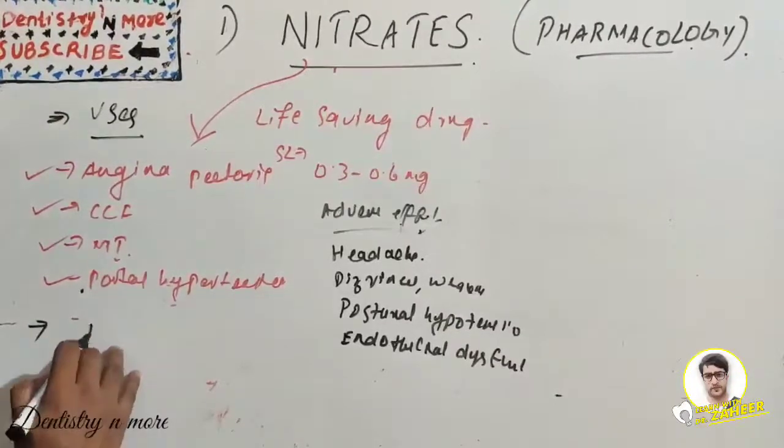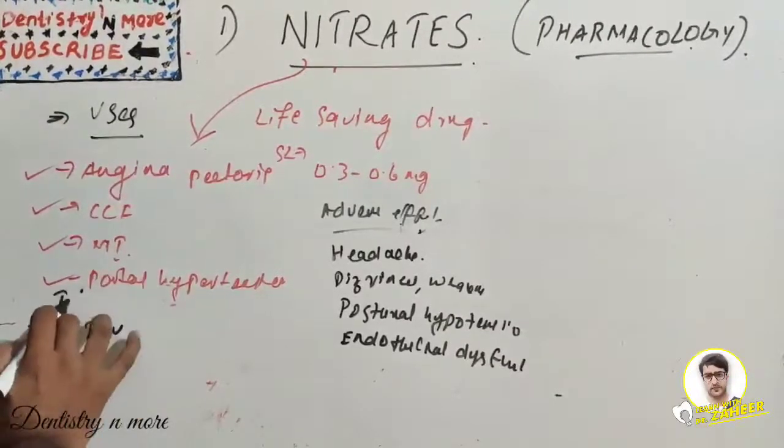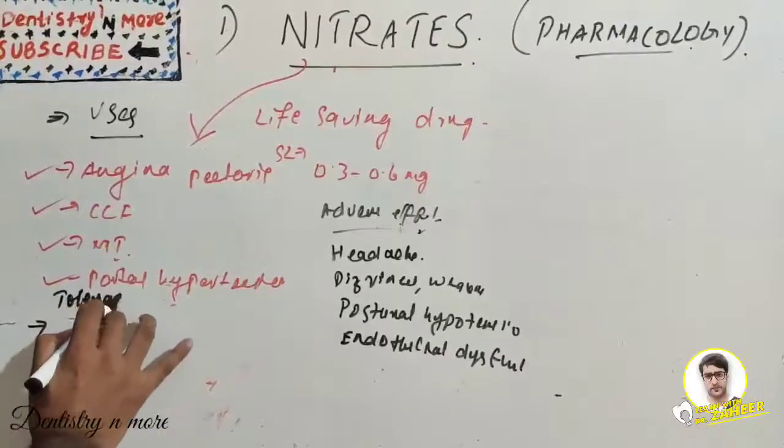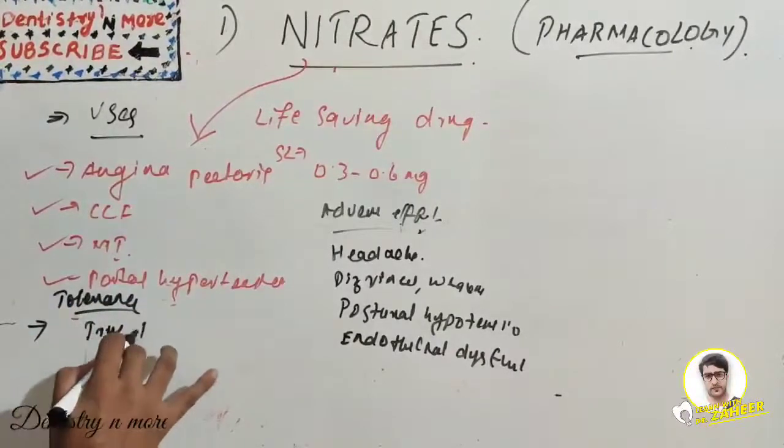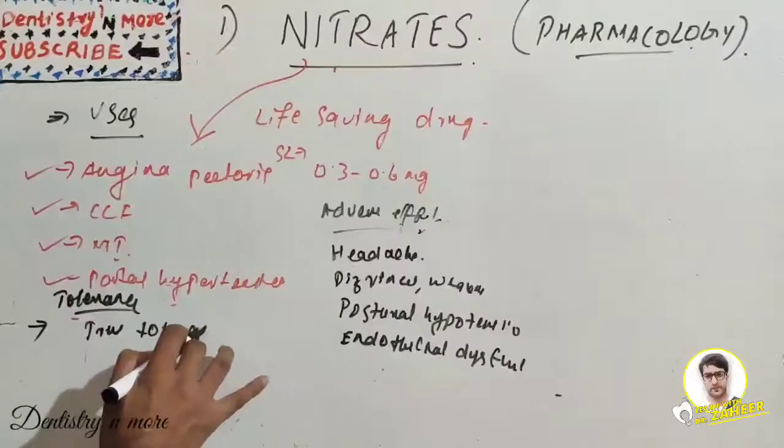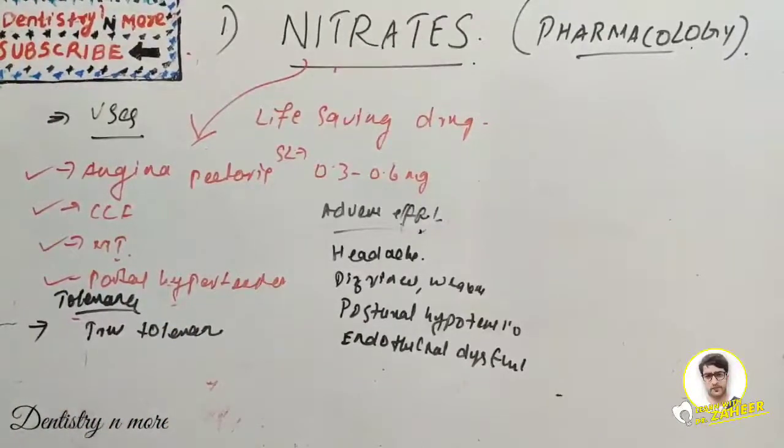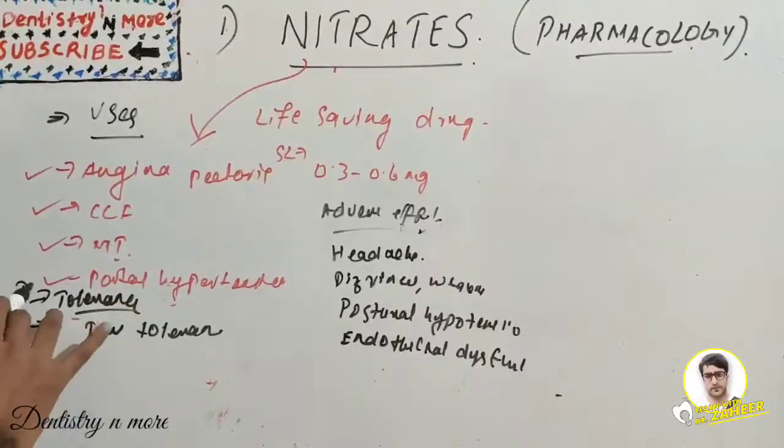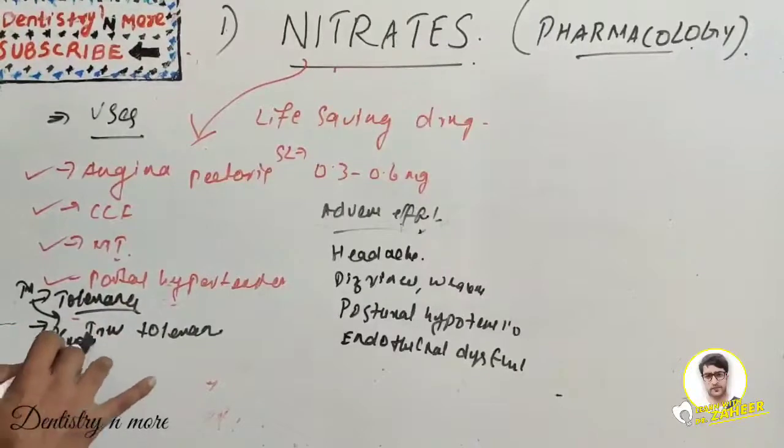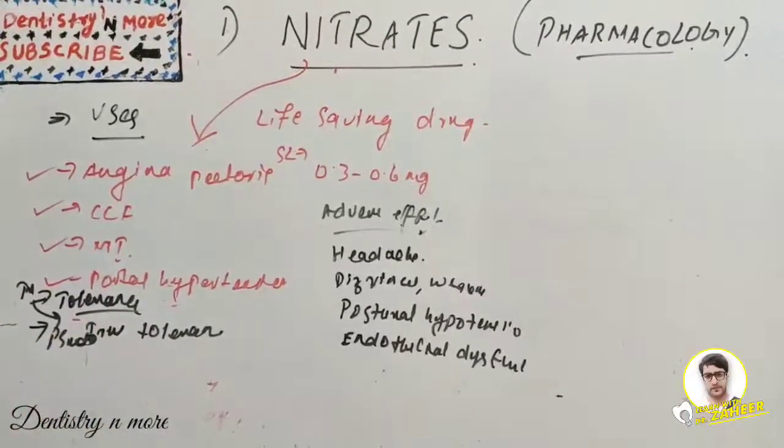We are talking about tolerance - true tolerance. The vascular smooth muscle is not able to convert nitroglycerin to nitric oxide - that is true tolerance. Whereas pseudo tolerance is activation of mechanisms extraneous to the vessel wall. So that was true and pseudo tolerance.